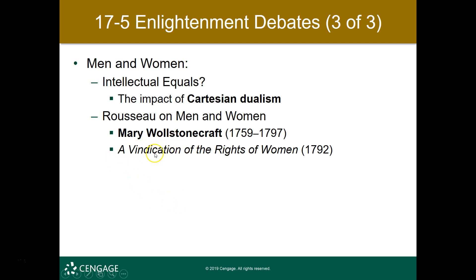For women, Mary Wollstonecraft is one of the most important figures. Her Vindication of the Rights of Women is one of the most important treatises on the rights of women during the Enlightenment. Make sure that as you read this chapter, you understand that the scientific revolution and the Enlightenment are building on one another, and that these events and these people have a big role in what's going to come next — which is the age of revolution.